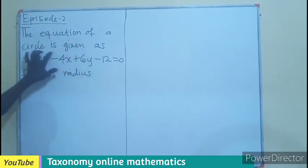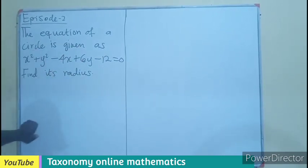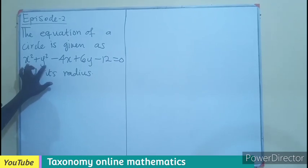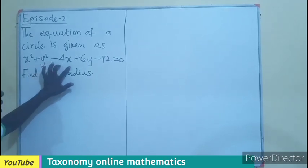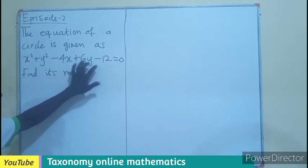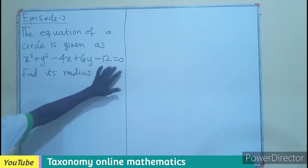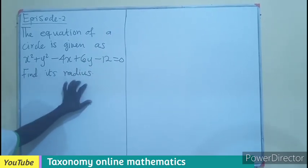The equation of a circle is given as x squared plus y squared minus 4x plus 6y minus 12 equals 0. We have to find the radius.